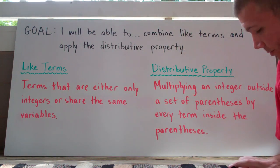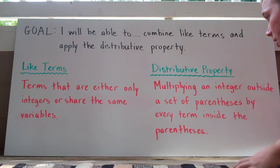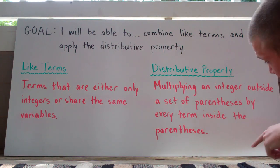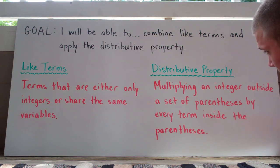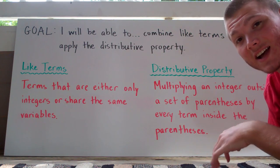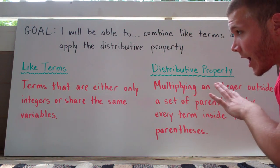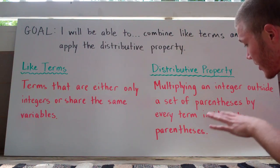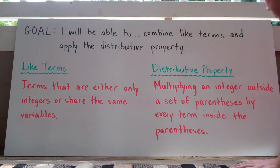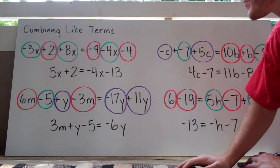The distributive property is multiplying an integer outside a set of parentheses by every term that is inside the parentheses. I'm going to do a bunch of examples for you guys so that you're aware of what that means.